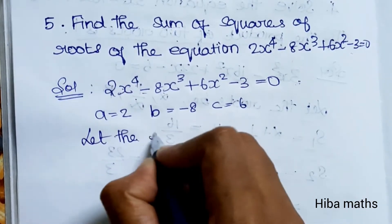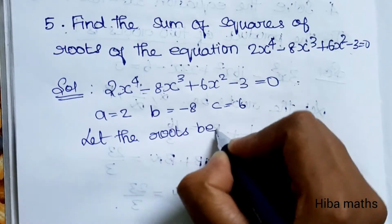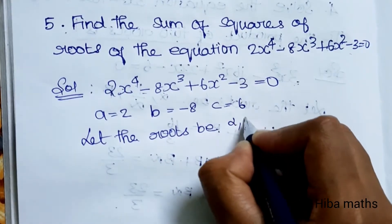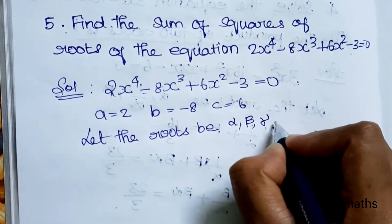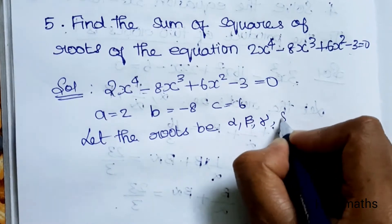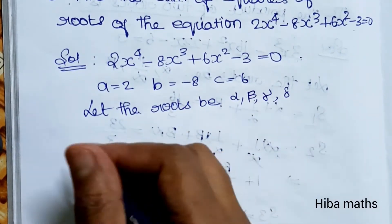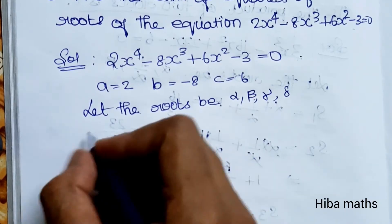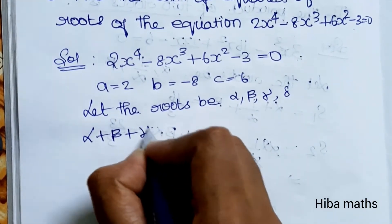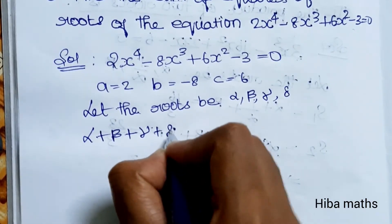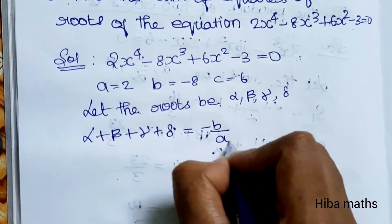Let the roots be alpha, beta, gamma and delta. So there are 4 roots. For the sum of the roots, alpha plus beta plus gamma plus delta is equal to minus b by a. This is the formula.